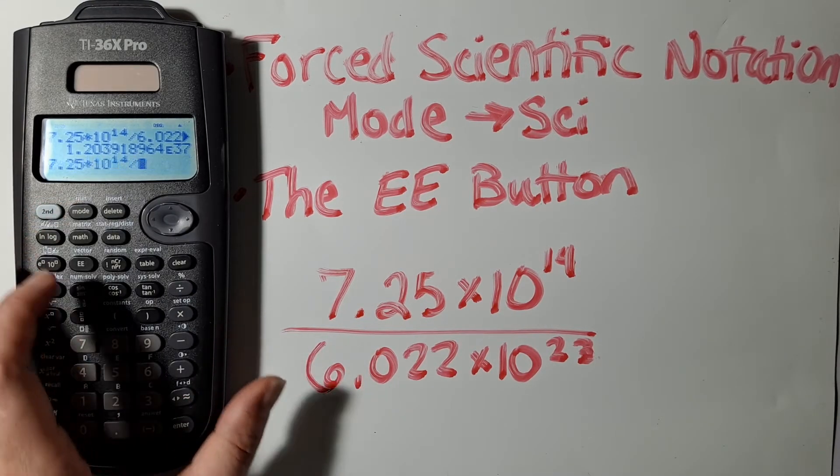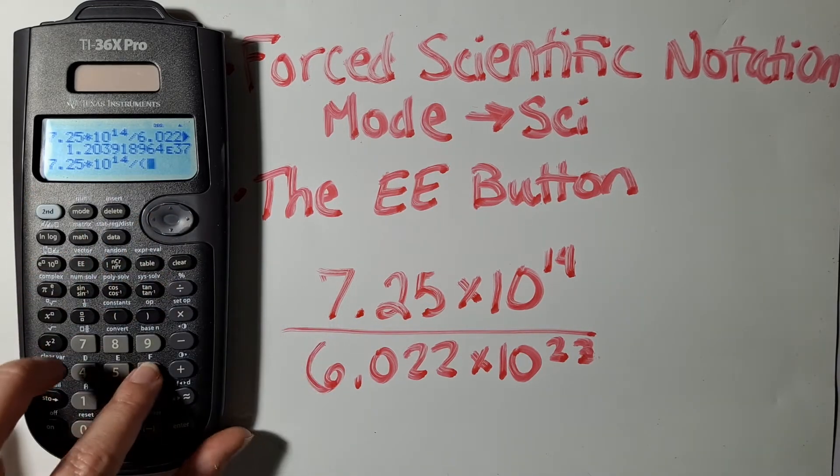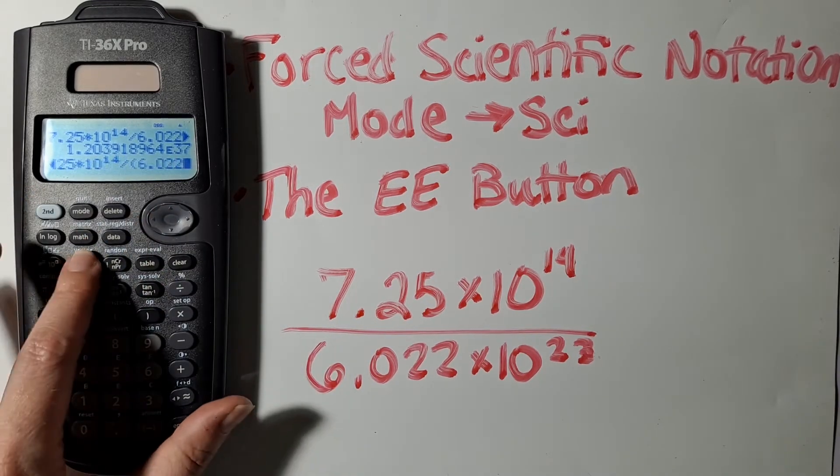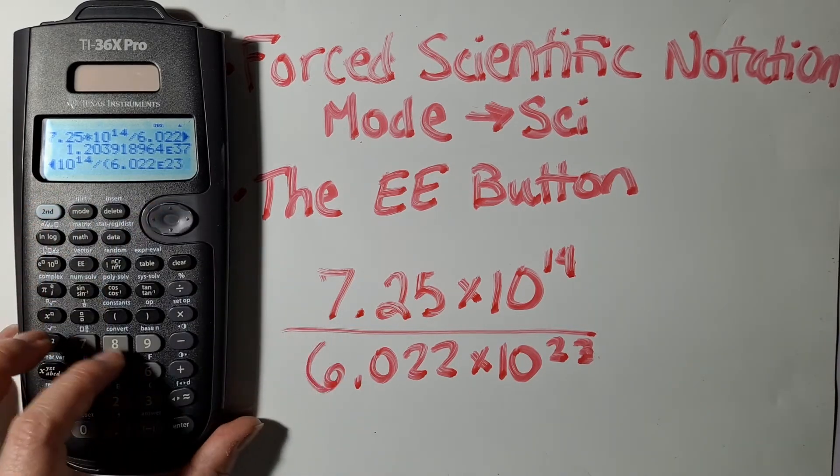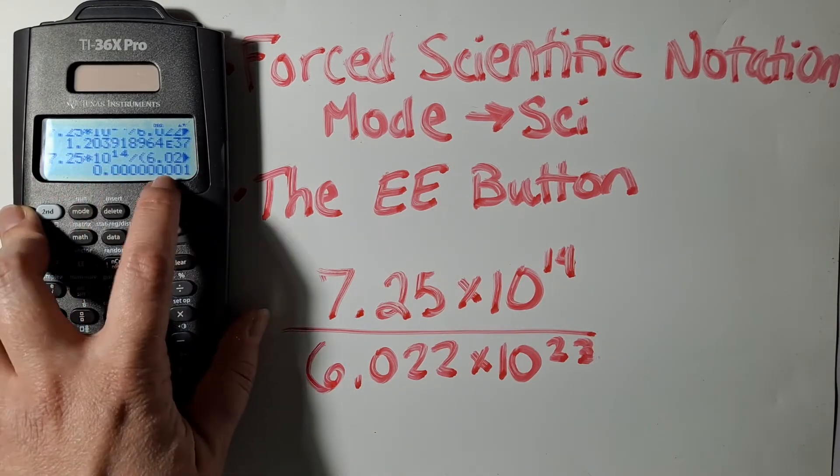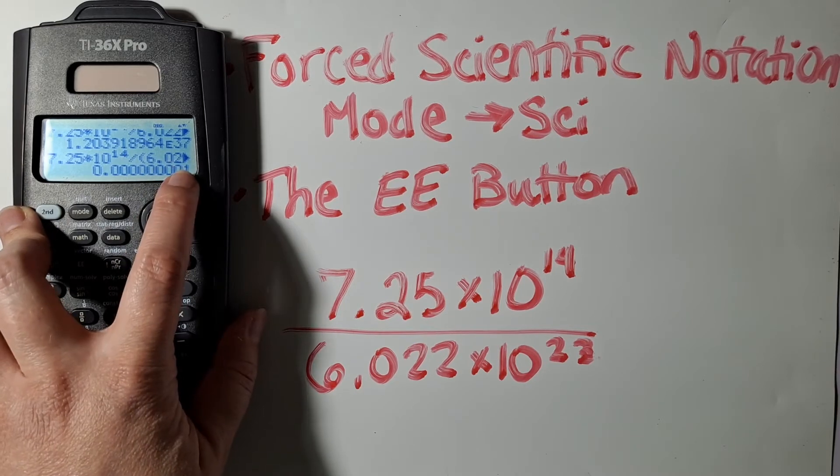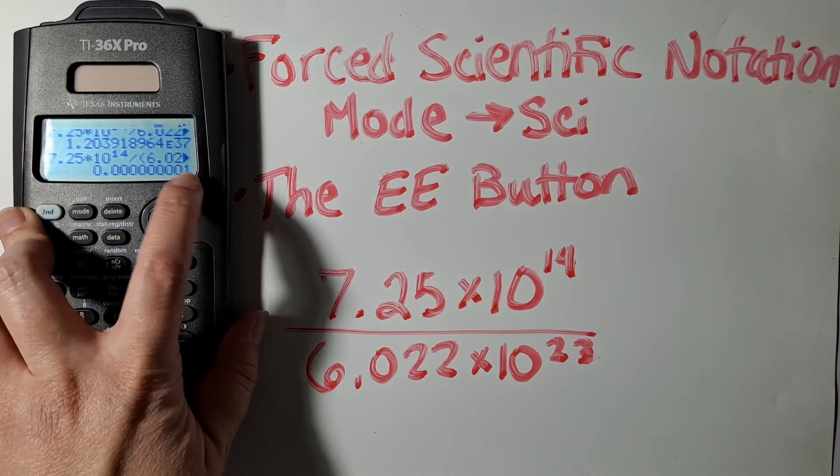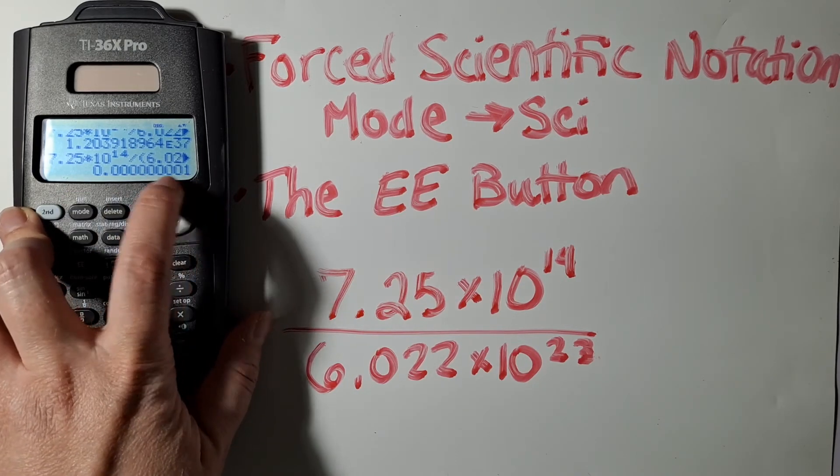So you can fix this by inserting parentheses around that answer. And then you can see that it does give a result that is more to the minus 8th exponent. But you can see here that it's kind of like maxing out the display. So this still isn't what I want.